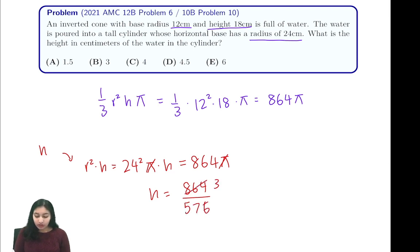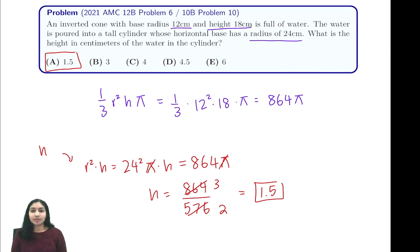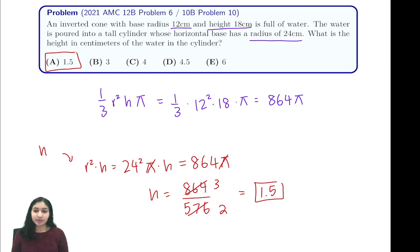So our answer is simply 1.5. This problem was pretty straightforward compared to a lot of the other problems on this test — all it required was using our formula for cones and cylinders and equating their volumes to get that our answer was 1.5.